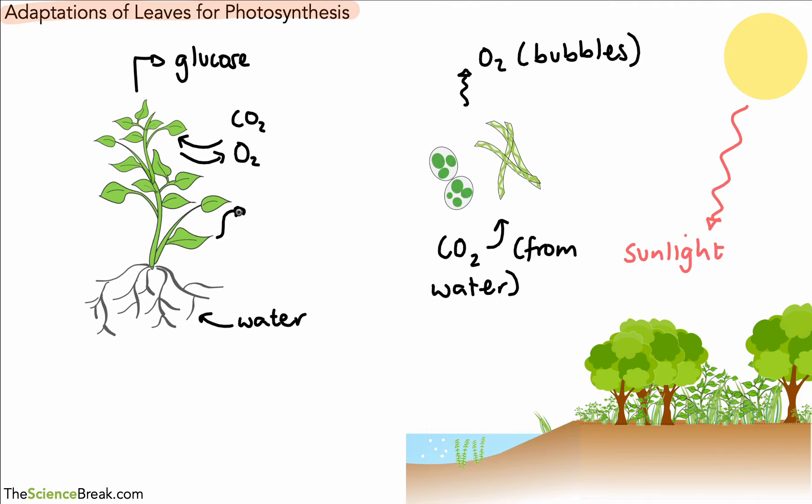If we look at our plant on the left there, it's important to remember that the leaves do most of the photosynthesis. These are the organs of photosynthesis. So we're going to look at the adaptations of those leaves.